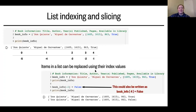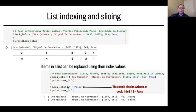Items in a list can be replaced using their index values. For example, if someone checks out the book from the library, we need to change the availability from true to false. We select book_info[-1] — the same as book_info[4] — and set it equal to false. When we print it out, we can see that the object has been replaced with the Boolean false.